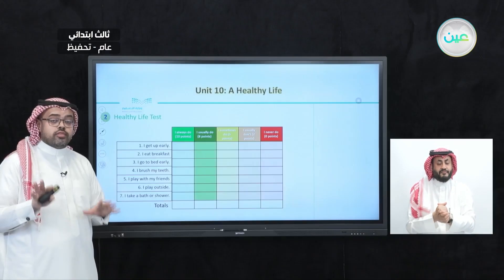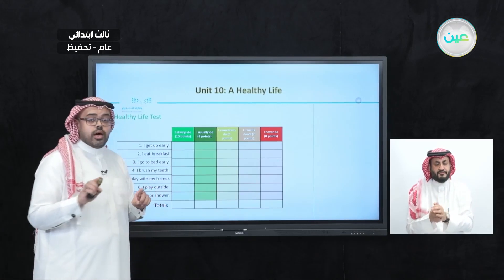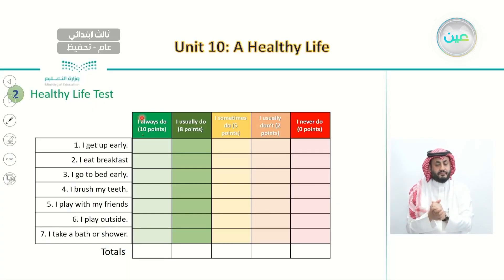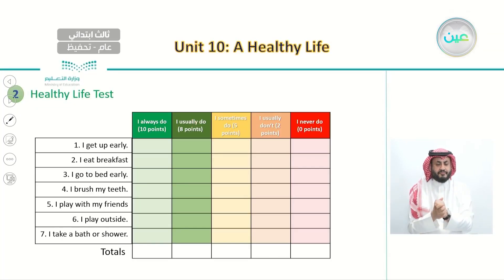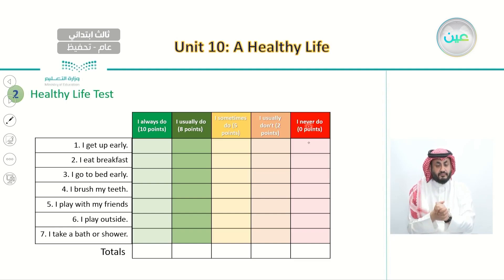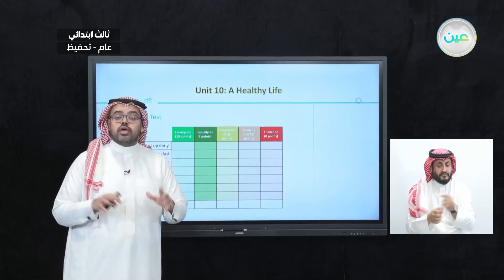For each activity, you decide how often you do it. If you always do it, you get 10 points. If you usually do it, you get 8 points. If you sometimes do it, you get 5 points. If you usually don't, you get 2 points. And if you never do it, you get 0 points. Now let's read about these activities and decide.